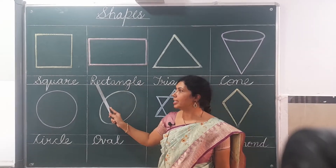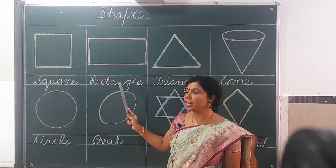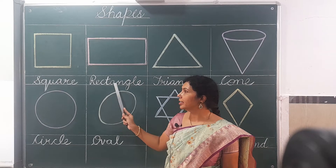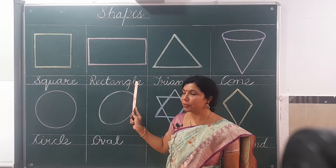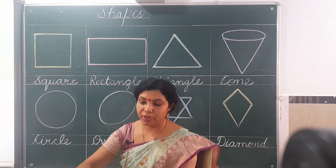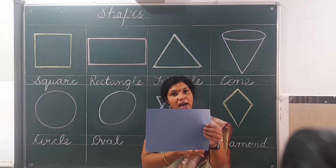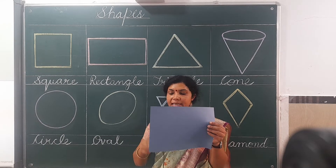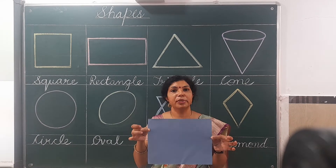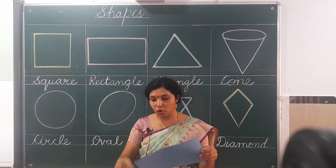Rectangle — R, E, C, T, A, N, G, L, E — rectangle. You can see this paper in which the upper side and down side are equal, and the left side and right side are equal. So this paper is in rectangle shape.